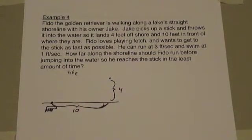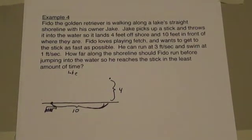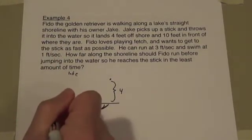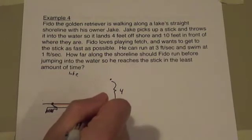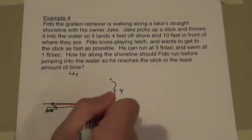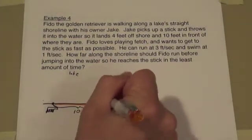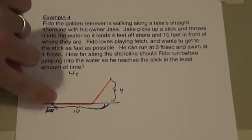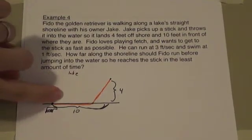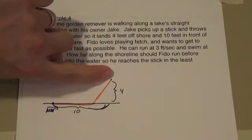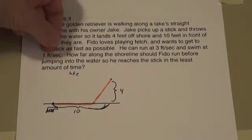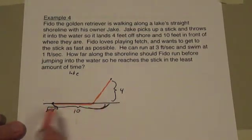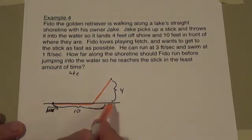Fido loves playing fetch and wants to get to the stick as fast as possible. So what he's going to do is run along the shoreline and then jump into the water taking a path like this, along the shoreline and then jump into the water and go straight for the stick. Now he'll do that because if he jumps right into the water he'll have to swim all of this way which is not a very efficient path because he swims slowly, only one foot per second.